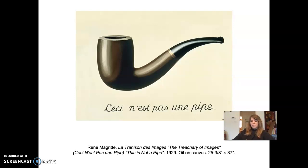As the viewer, you might wonder: if this is not a pipe, what is it? Well, the answer is that this is a painting — it's not a pipe. The title, "The Treachery of Images," hints at the visual game the artist is playing with this piece. What do you think about it? Do you understand what the artist is trying to say by juxtaposing a hyper-realistic pipe with the matter-of-fact words 'this is not a pipe'?